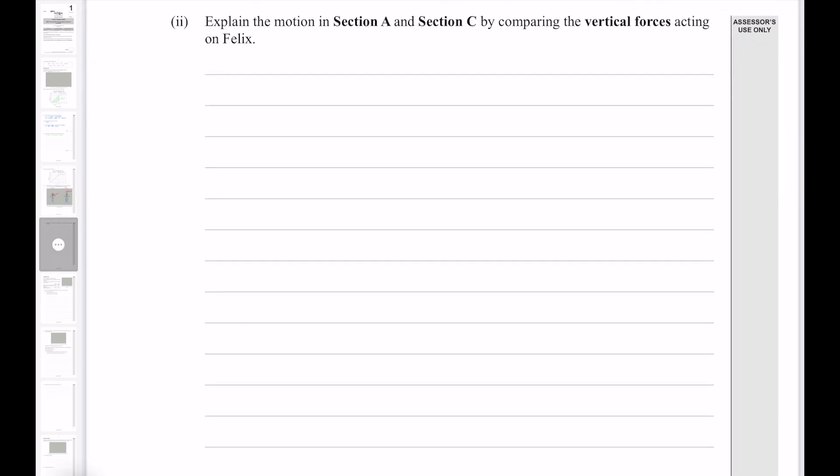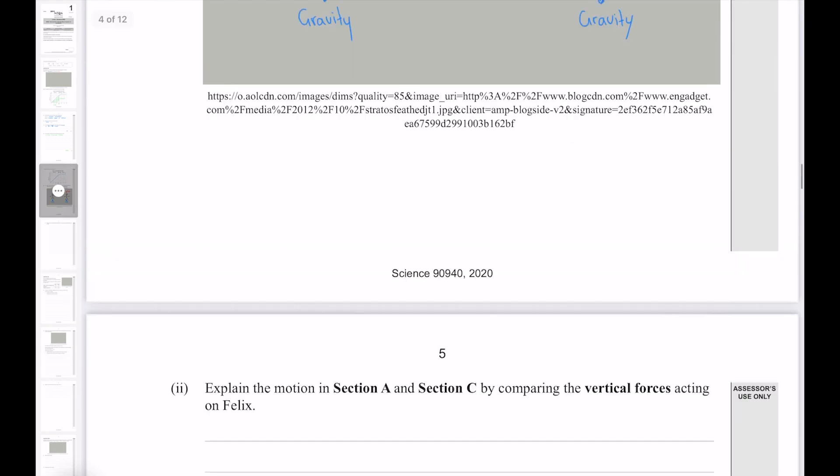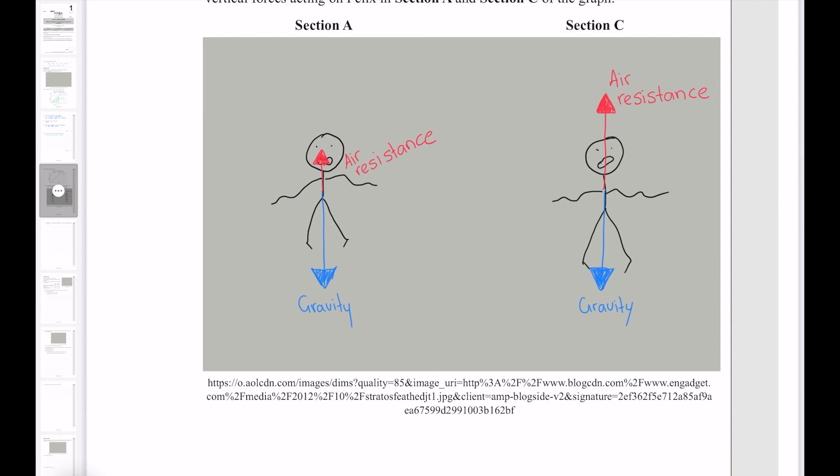Explain the motion in section A and section C by comparing the vertical forces acting on Felix. And so as I was saying, we have the gravity force which does not change because the mass of Felix does not change. And then we have our opposing force of air resistance. Initially air resistance is smaller than gravity. Meaning that there is an unbalanced downwards force which is accelerating Felix downwards. But then as he accelerates his speed increases. So too does his air resistance to the point where it is equal to that of gravity. At this point, since the forces up and down are equal, there is no more net force and there is therefore no more acceleration.